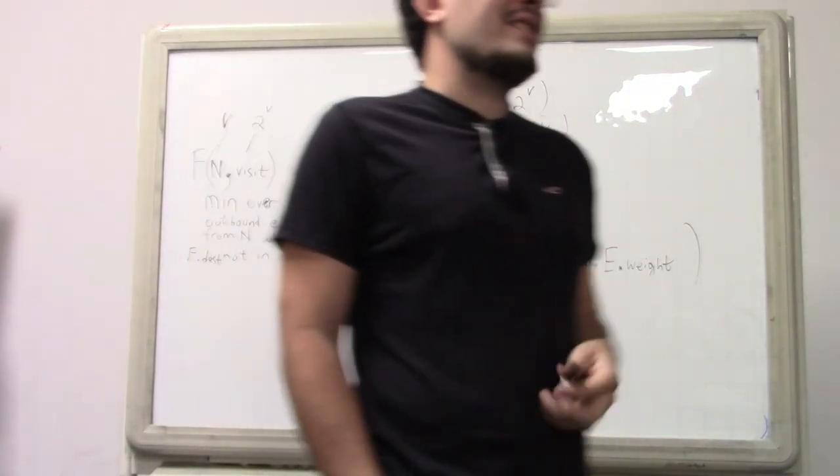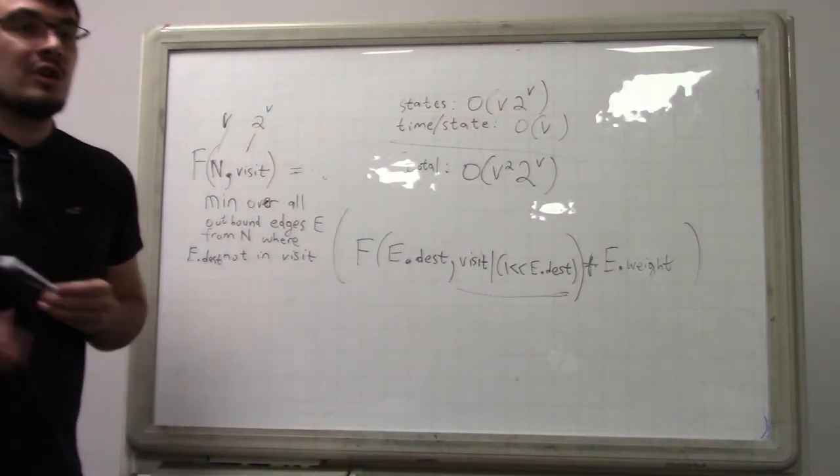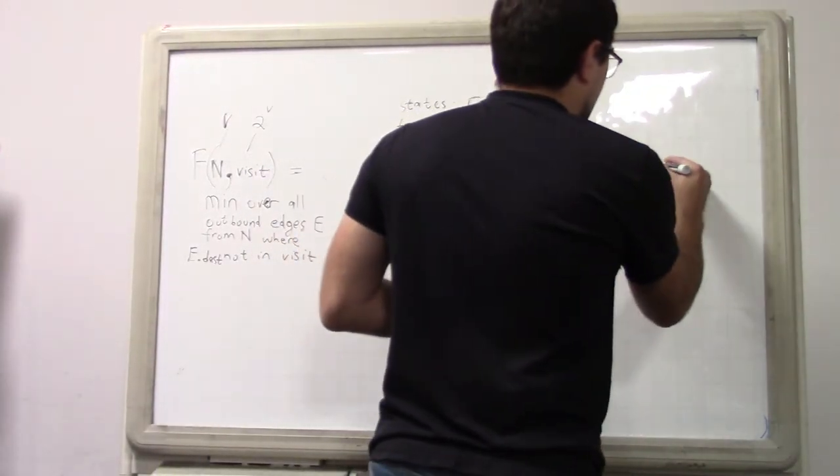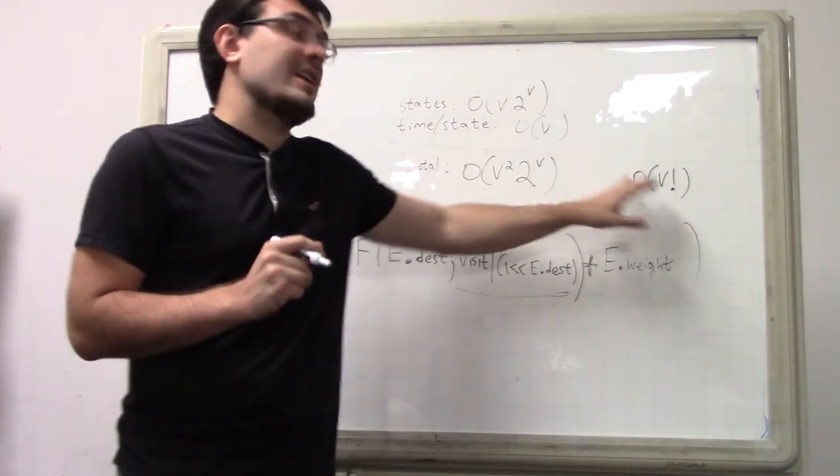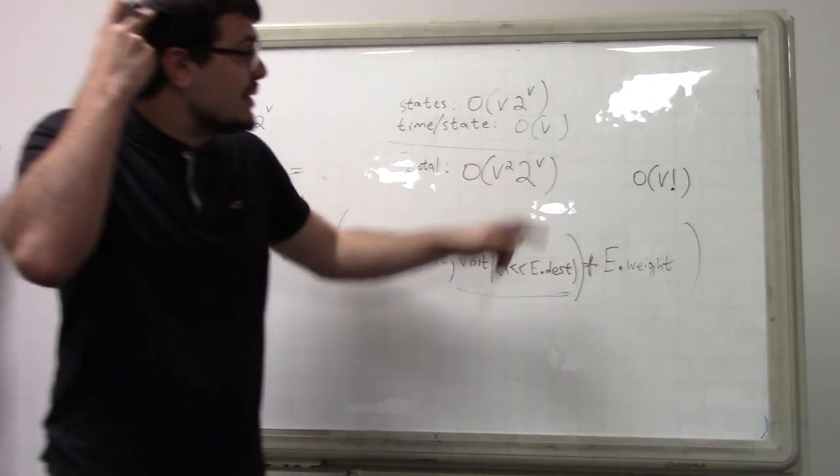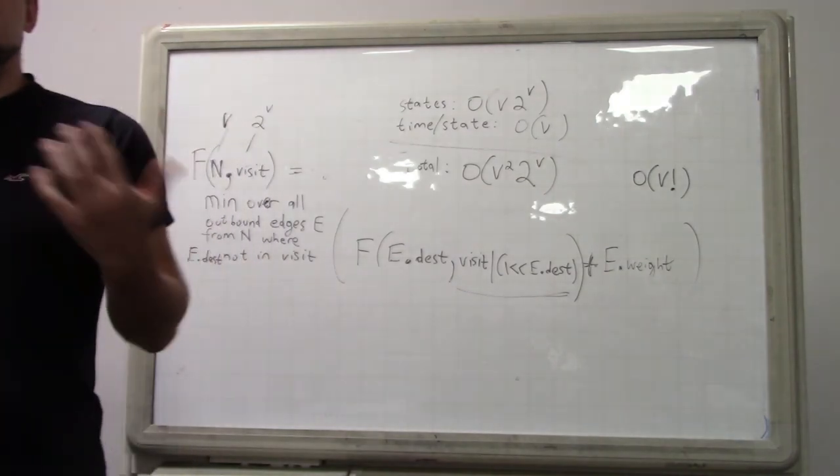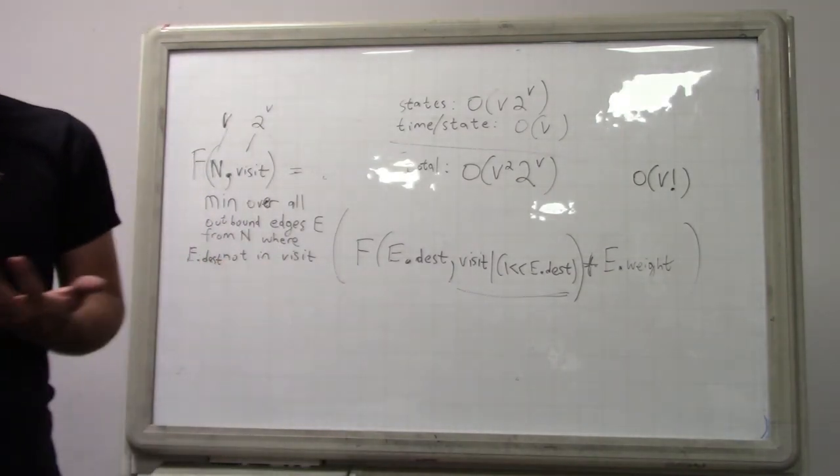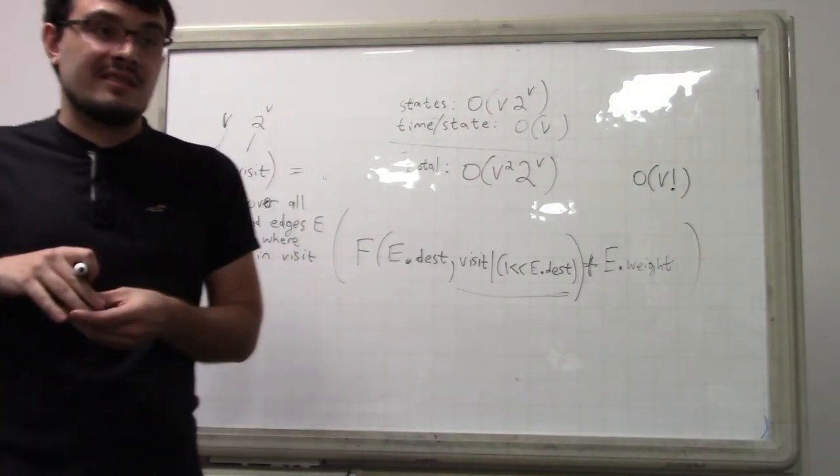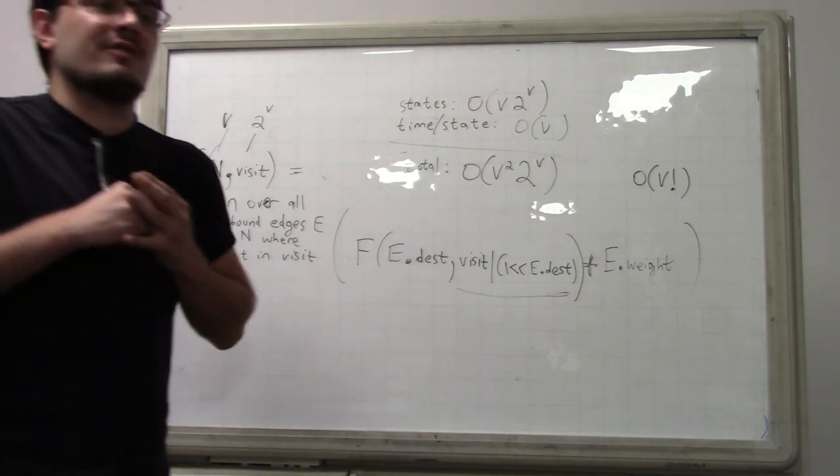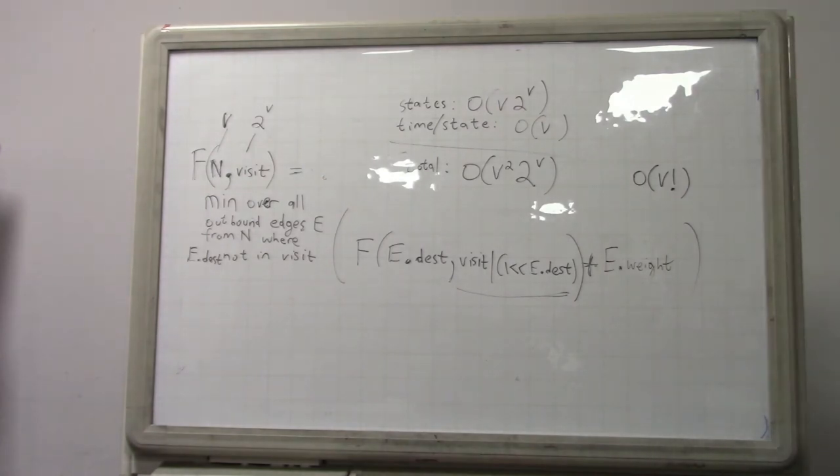but here we see kind of an example where okay we're not actually able to get this problem down to say V squared or V cubed or any polynomial using dynamic programming but what we're able to do is we're able to reduce the time complexity because the naive solution is just V factorial but it fails to reuse information right the reason the solution is more efficient we get a better time complexity is because we successfully reuse some information what information do we reuse well there may be multiple pathways by which you reach the same state like you might reach the same history of visited vertices but from different places and there we can have just a single solution for both of those branches of recursion and save a little bit on the time complexity while still not being able to go below exponential time